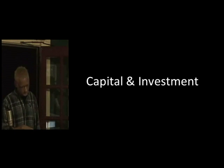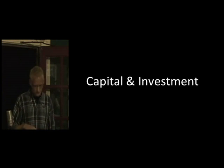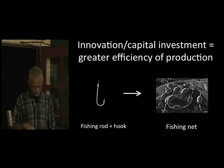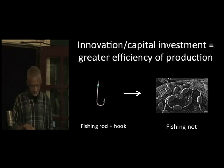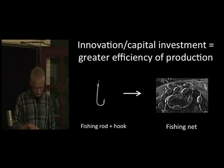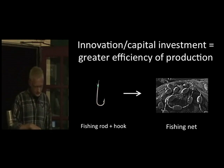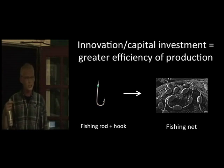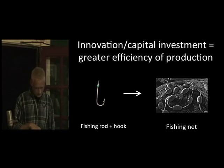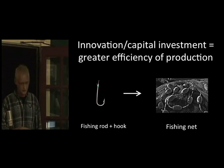He spends more time in research and development and invents a dramatically more efficient method of producing fish — a fishing net. With a fishing net, he could catch 10 times the fish in the same amount of time with the same amount of labor, drastically increasing his efficiency of production. He decides to start saving up capital, which just means accumulating money, until he had enough to purchase the materials he needed to build this net, which we call a capital good.